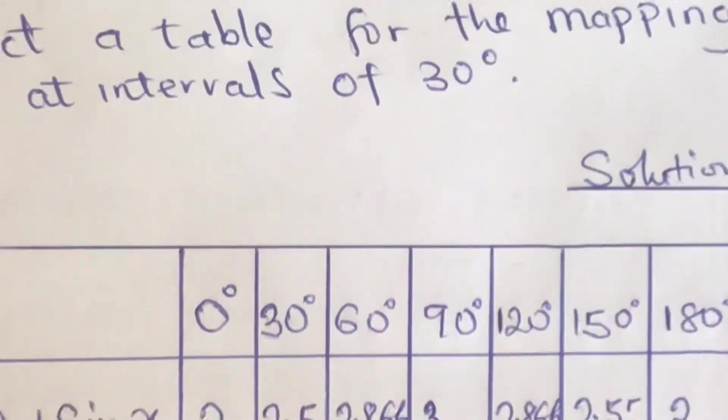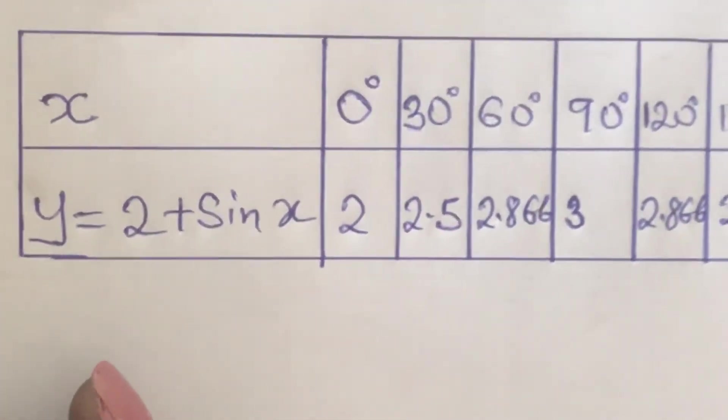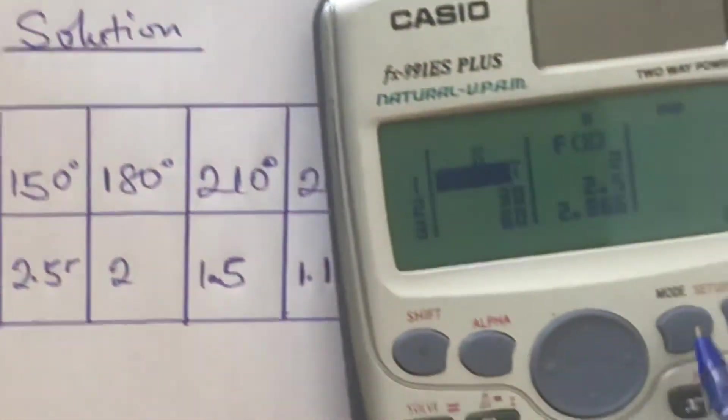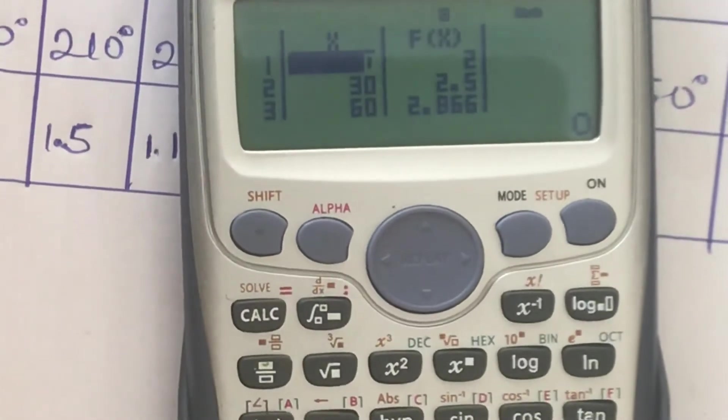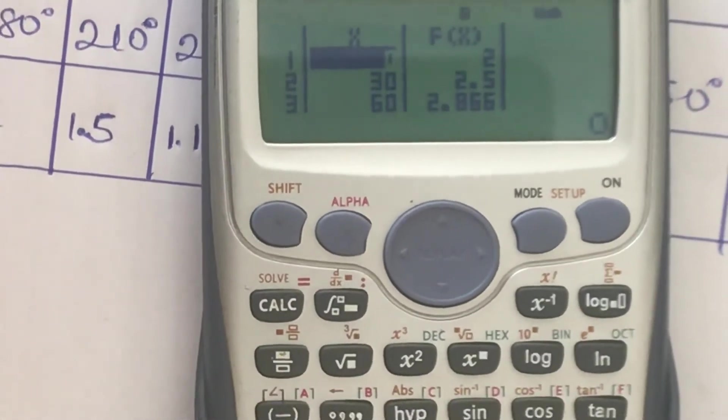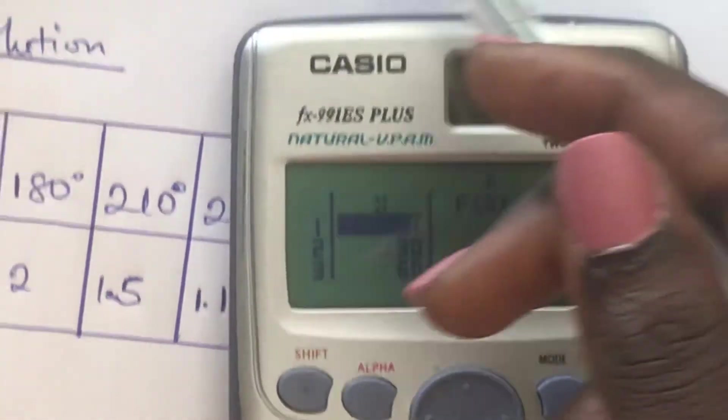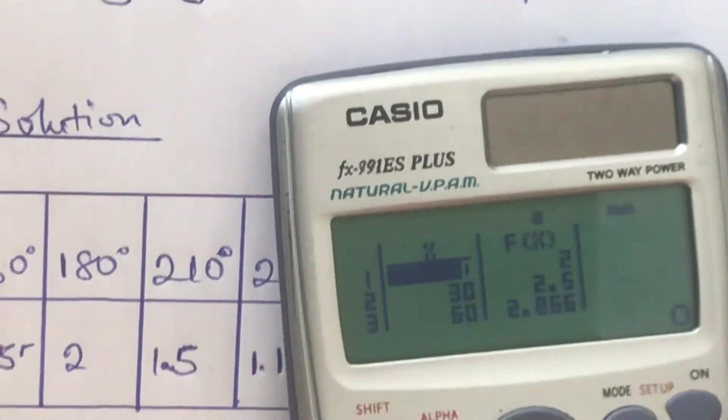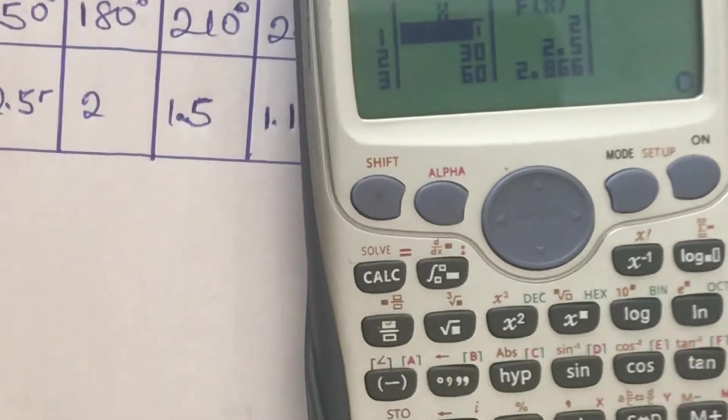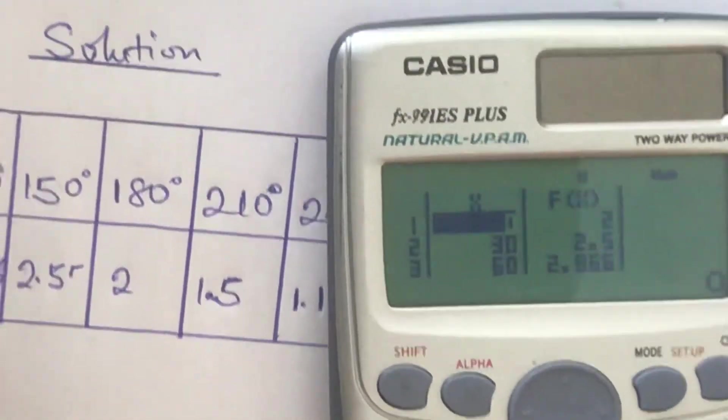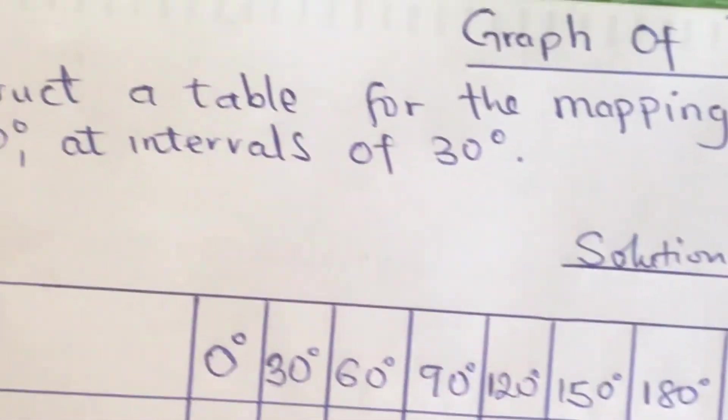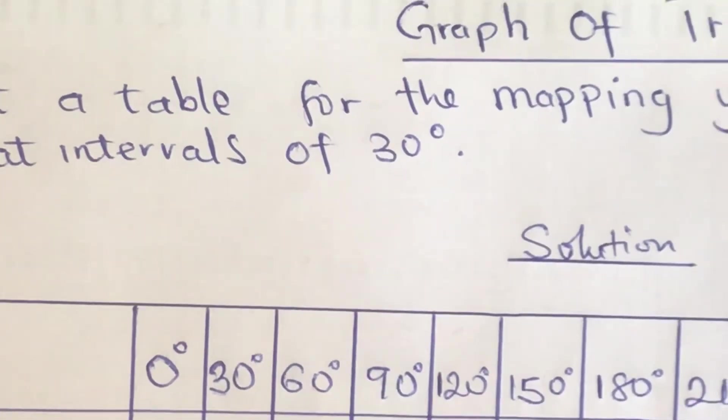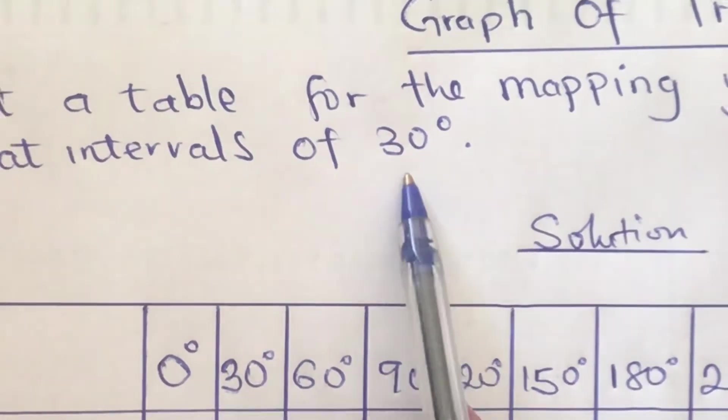First, you make sure your calculator is on. We are using the Casio calculator. Then you press on your mode key. Then you choose number 7, which is your table. Then you put in your function, which is the equation given to you. Then you press on where you are starting, starting from 0 degrees and ending on 360 degrees. Then you show your intervals, which is the steps involved, of equal interval of 30 degrees.